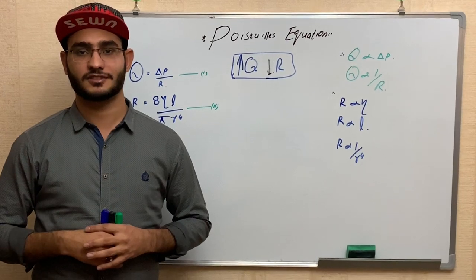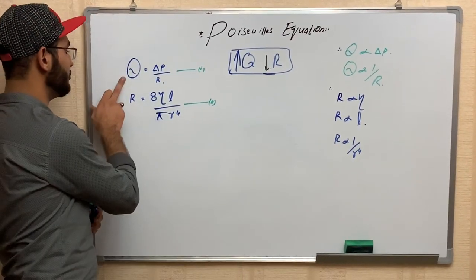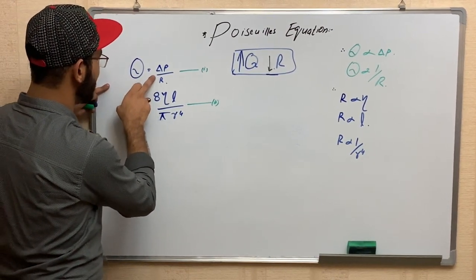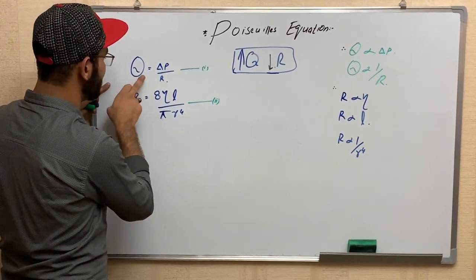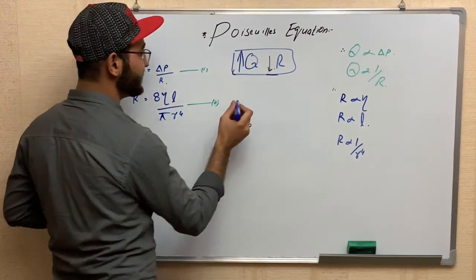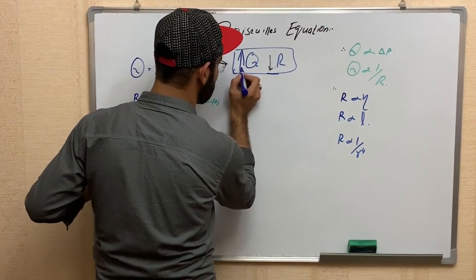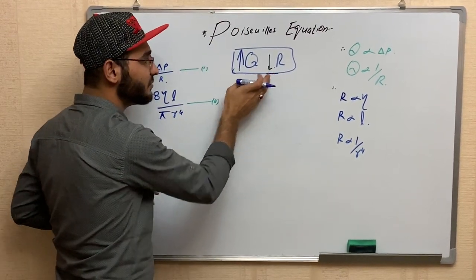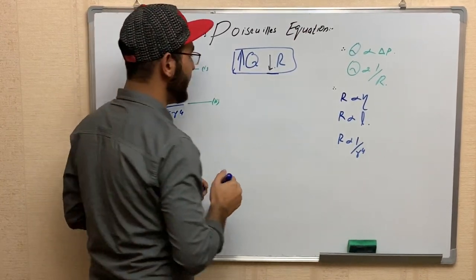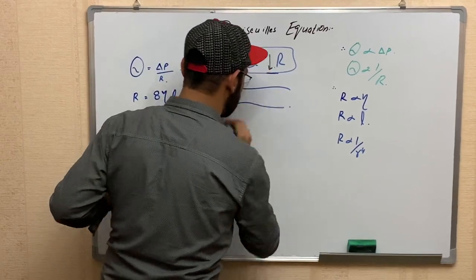Today we are going to discuss the Poiseuille equation. This equation is related to Q, meaning the flow of blood, which is directly proportional to the pressure gradient but inversely proportional to resistance. When resistance decreases, blood flow increases, and when resistance increases, blood flow decreases. Here is a simple diagram to illustrate this.